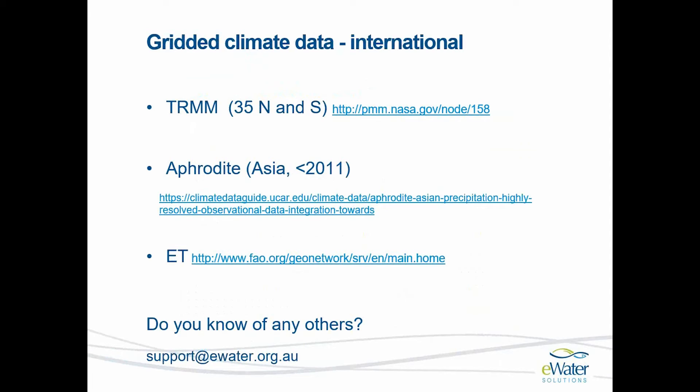There are also a number of remotely sensed global datasets available with climate, rainfall, and PET data. TRMM is the Tropical Rainfall Measuring Mission, available since 1998, now with data up until 2014. Aphrodite contains data up until 2011. A new satellite was also launched in the middle of 2015. The FAO has a geo-network system where they have ET and other datasets available. If you know of any other global datasets that could be used for climate information, we'd appreciate it if you let us know.